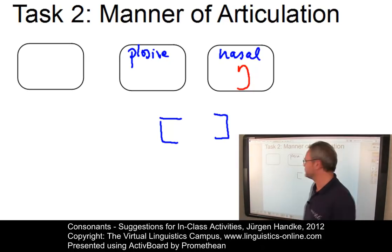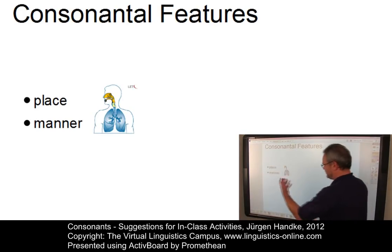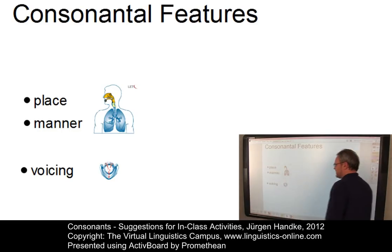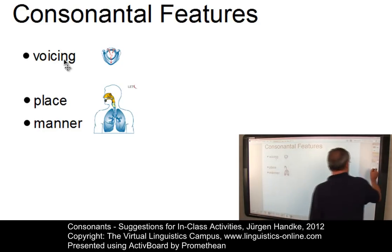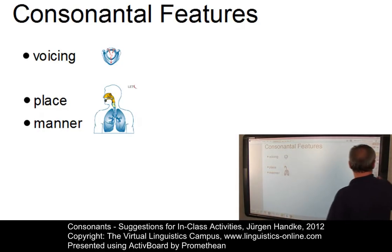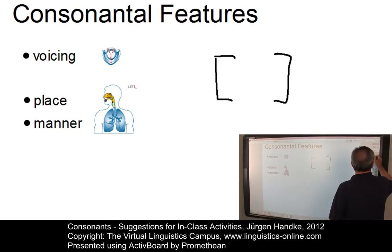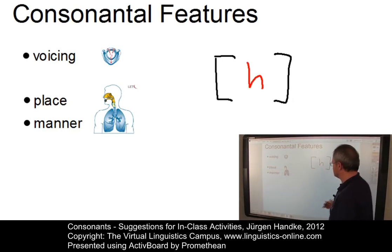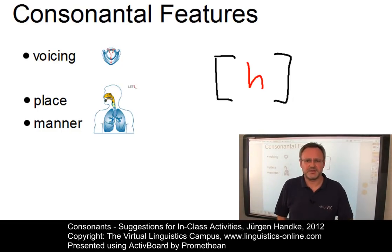The next exercise brings it all together. Having already defined place and manner, you will now ask the students to name the third criterion — which is, of course, voicing. Here is the correct sequence of labeling consonants henceforth. You can again define some consonants and ask the students to describe them in terms of voicing, place, and manner of articulation.